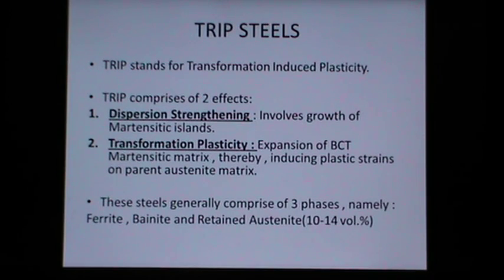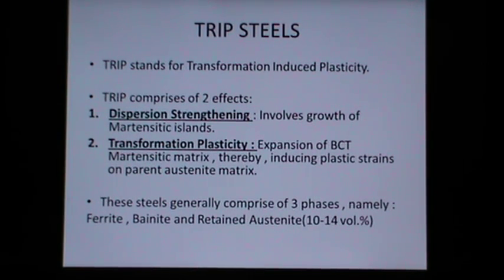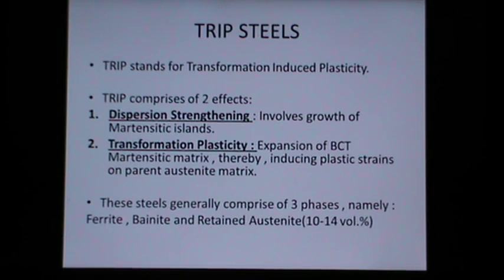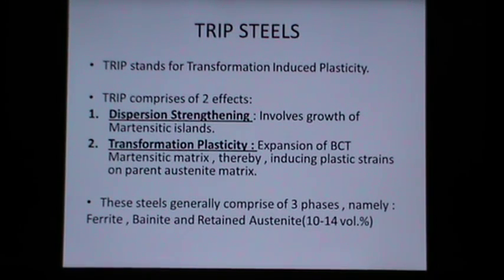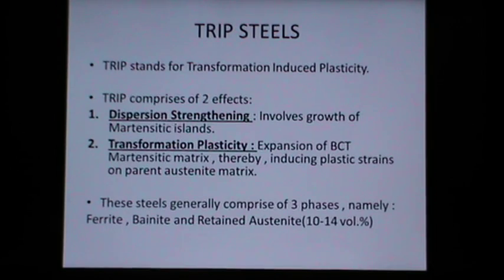TRIP steels generally comprise three phases: ferrite, bainite, and retained austenite. Retained austenite is present in almost 10 to 14 volume percent.